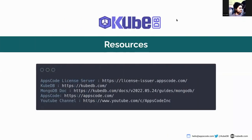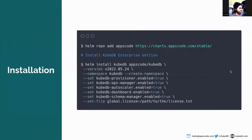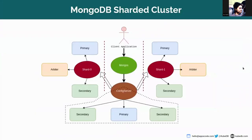Today I'm going to show you how to reconfigure an arbiter-enabled MongoDB sharded cluster using KubeDB. For the demonstration, I have already installed KubeDB in my local Kubernetes cluster. You can go to license.appscode.com to get the KubeDB license. I'm using the KubeDB version 2022, May 24th version.